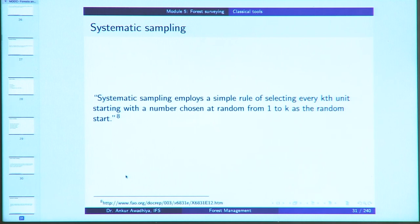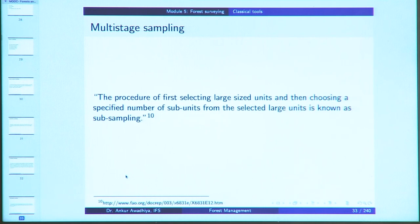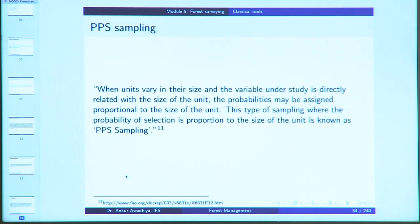Simple random sampling is when each possible combination of sampling units has the same chance of being selected, such as a lottery. Systematic sampling uses a formula of selecting every k-th unit starting with a number chosen at random. Stratified sampling divides the heterogeneous population into subpopulations known as strata, each internally homogeneous, so that a precise estimate of any stratum mean can be obtained. Multistage sampling first selects large-size units and then chooses a specified number of subunits from those. PPS sampling — probability proportional to size — assigns probabilities proportional to the size of the unit, so the largest-sized individuals are better represented.